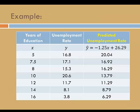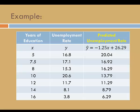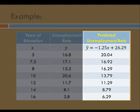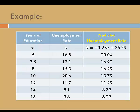We can make predictions for each of the years of education in our original data set. We've already predicted the unemployment rate when years of education is 5. In this table, I've predicted the unemployment rate for the other values of x. In each instance, I replace the x variable in the regression equation with a value of x from the original data set. For example, the predicted unemployment rate when years of education is 7.5 is 16.92. It's important that we distinguish between observations and predictions. In the middle column we have observed unemployment rates, and in the right-hand column these are predicted unemployment rates. For the observed unemployment rates we use the symbol y, and for the predicted unemployment rates we use the symbol y-hat.